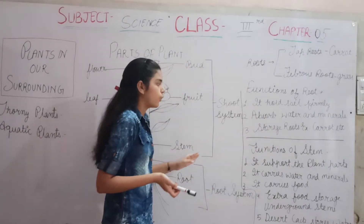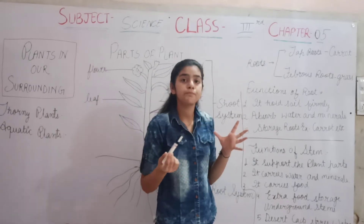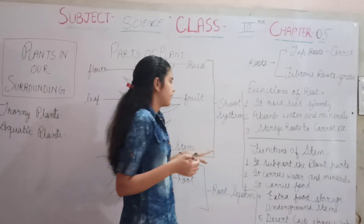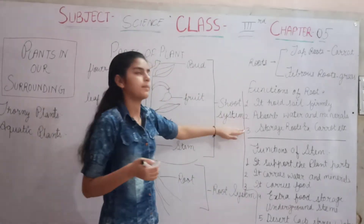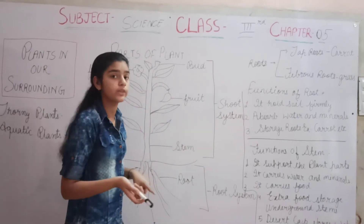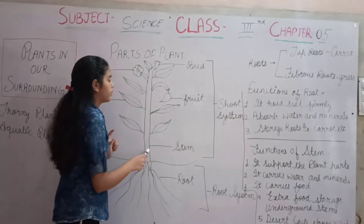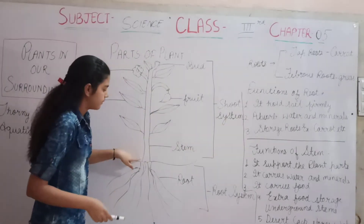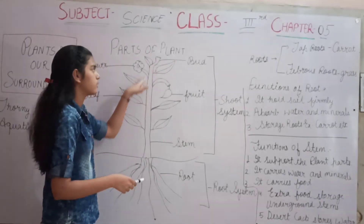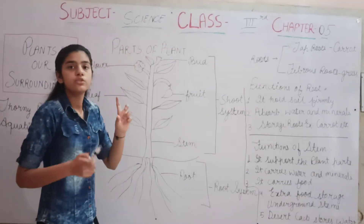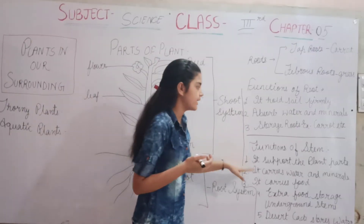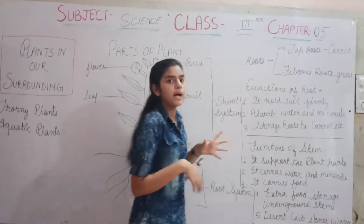Now we will go to the stem. The stem is part of the shoot system. The stem grows above the ground and is the longest part of the shoot system. Its main function is to support the plant parts.